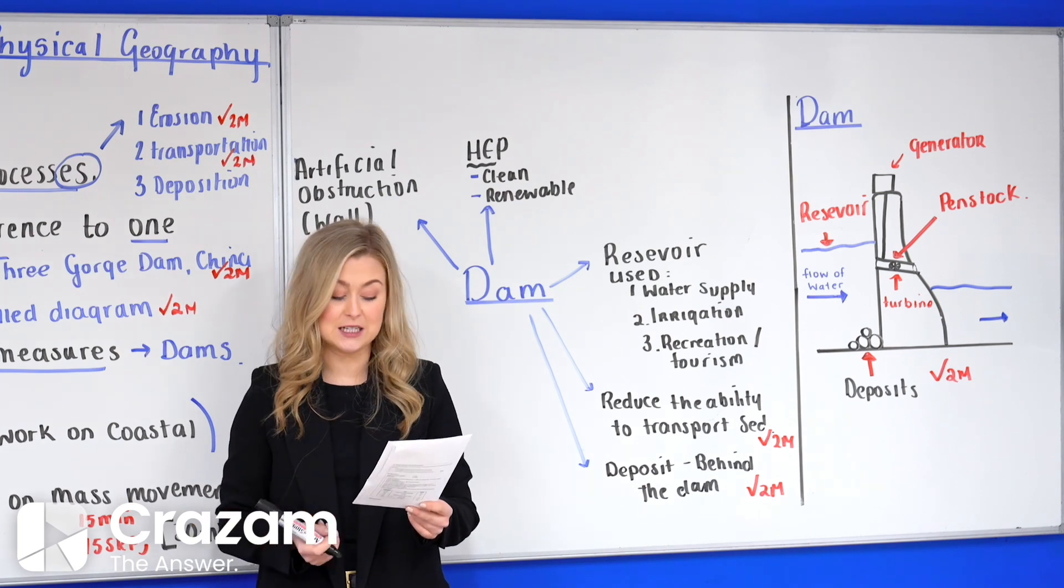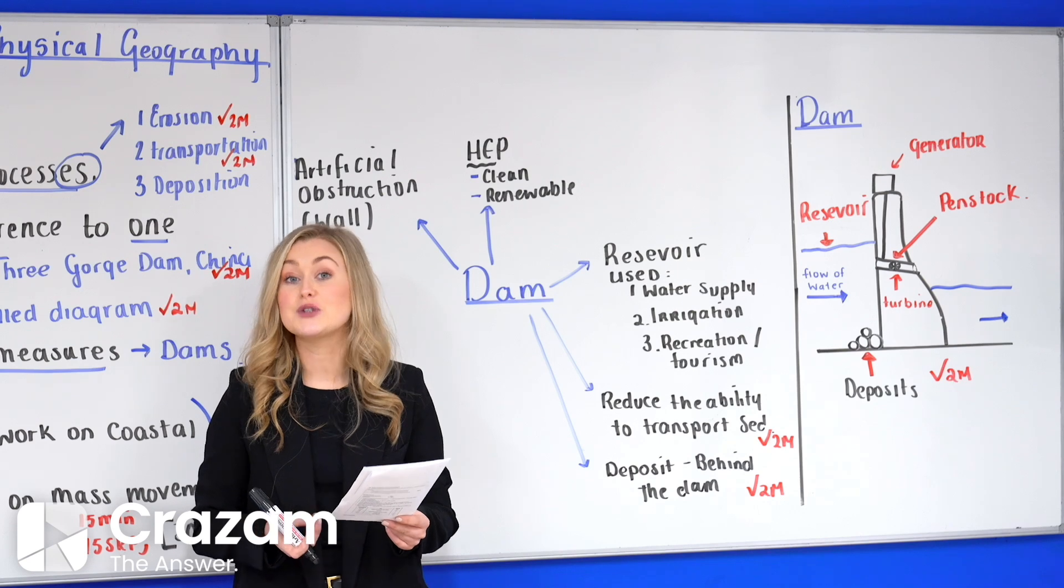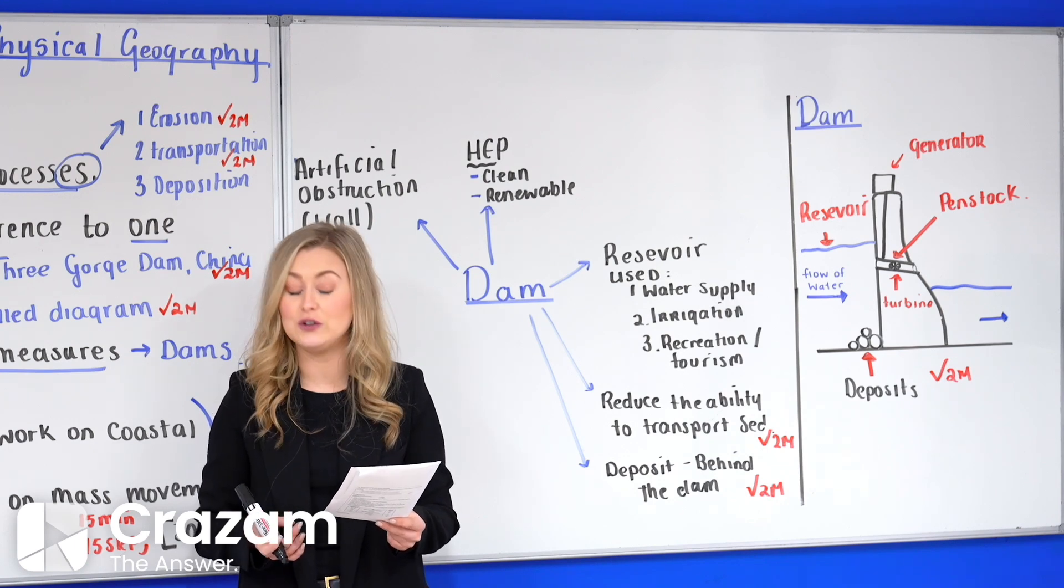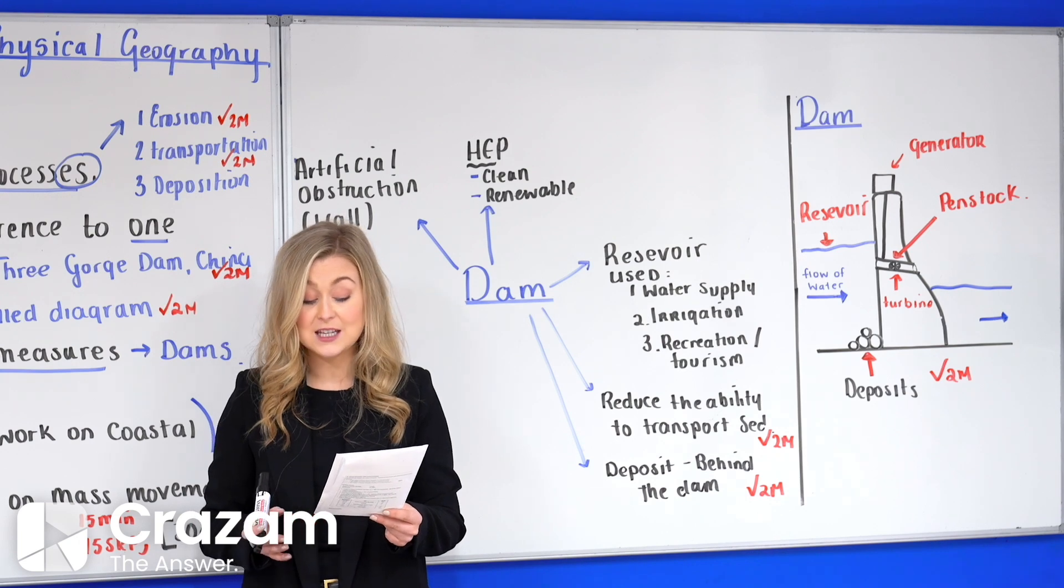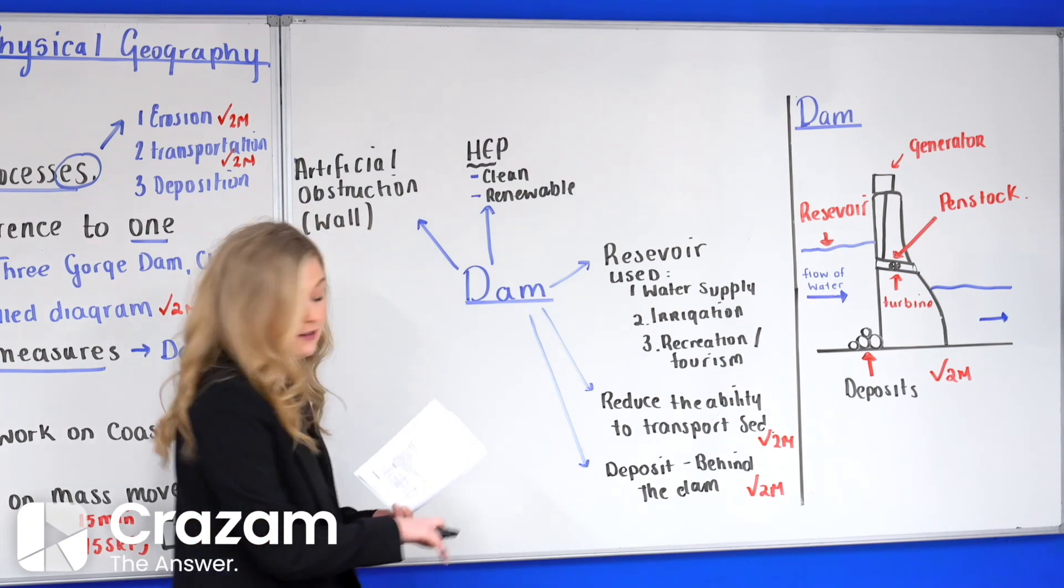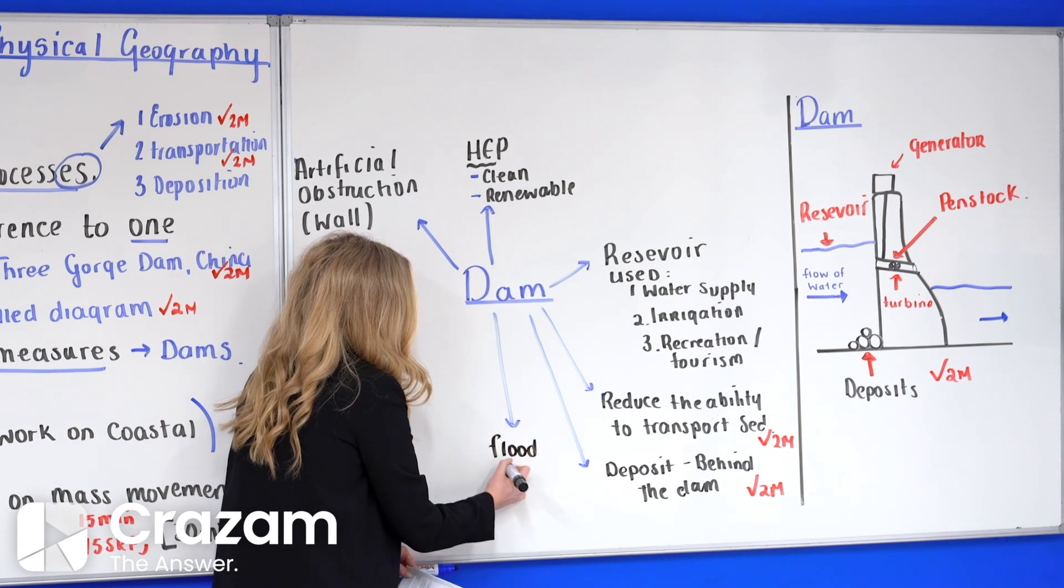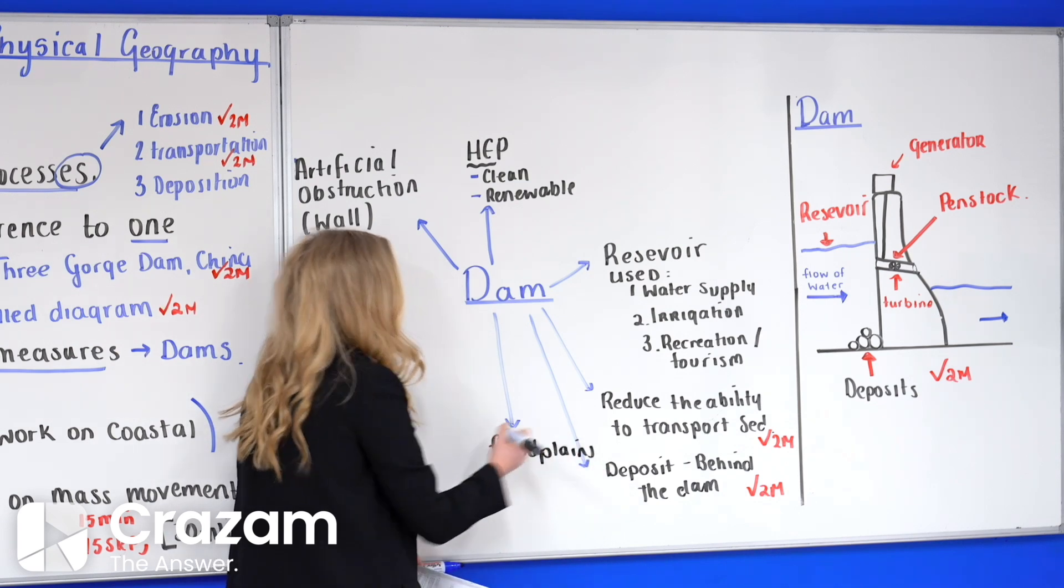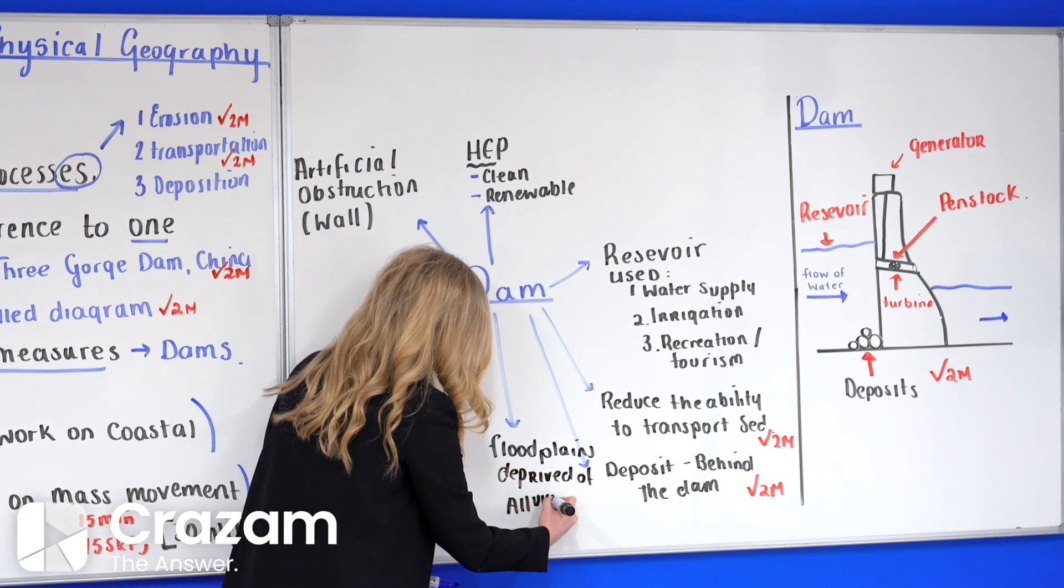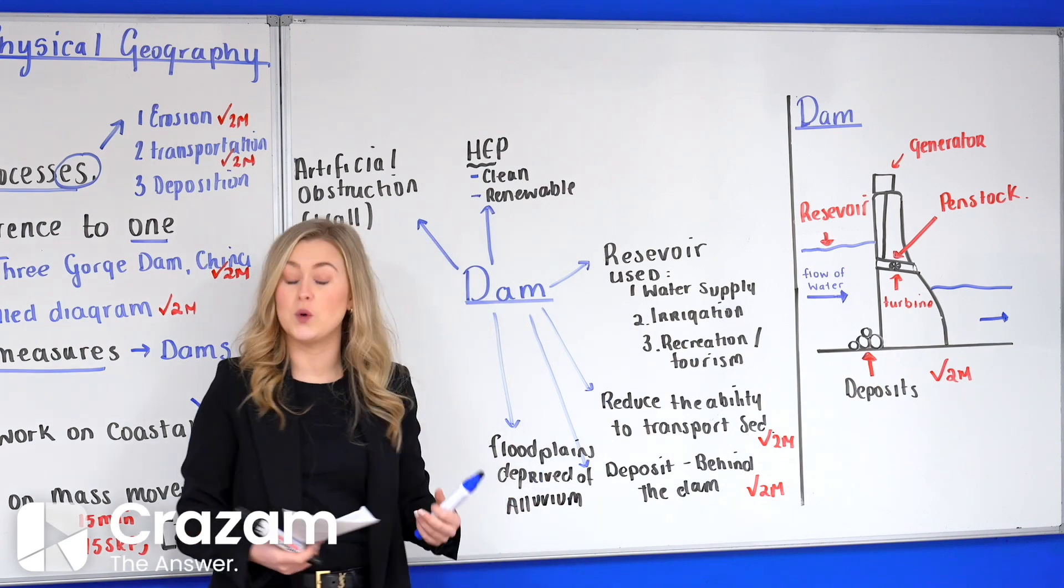Now after this we're going to go on to our suspended load. Only some of the suspended load - suspended load is that fine particles of sand and silt - will be able to pass through our pinstocks or pipes. This results in the downstream areas being deprived of alluvium along its floodplains, increasing the need for artificial fertilizers and increasing the costs of farmers. Now here we're going to say floodplains deprived of alluvium, and we know floodplains occur in the old age stage.